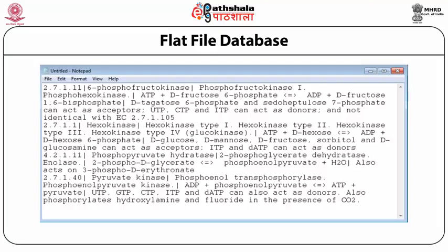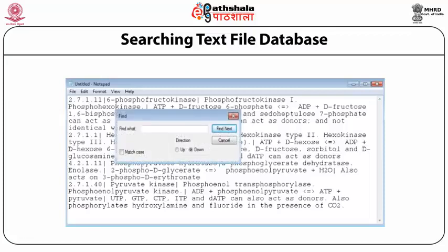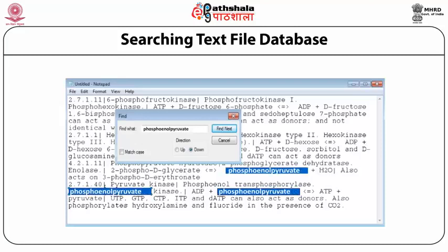Let us now store this file with a name. Storing data values for all the records in one file in this way is known as the flat file system for storing a database. Now we would like to search the relevant data values already stored. In a text file, the data values can be searched for a desired keyword, say 'phosphoenol pyruvate' in this case. The find command of the edit menu will highlight 'phosphoenol pyruvate' three times when entered into the search text box. This is simple retrieval of two records, but the plain finding of two records does not reveal any additional information — it only conveys that this database has two records which contain that keyword.